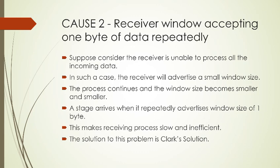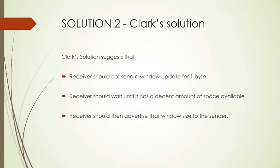For Cause 2 — the receiver window accepting one byte of data repeatedly — consider when the receiver is unable to process all incoming data. It will advertise only a small window size. This process continues and the window space becomes smaller and smaller until it repeatedly advertises a window size of one byte, making the receiving process inefficient. The solution is Clark's Solution, which suggests the receiver should not send a window update for one byte. The receiver should wait until it has a decent amount of space available before advertising the window size to the sender, allowing the sender to send more than one byte.